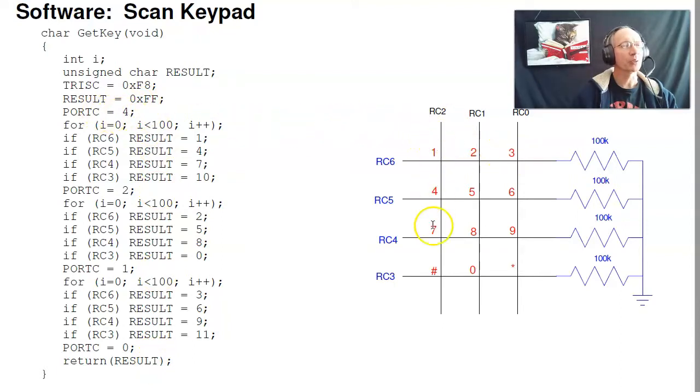I'll then check the first column, port c equals four, outputs 100, checking the first column. If RC6 is high, I push key number one. If RC5 is high, I push key number four, and so on. I'll then check the second column, and then check the third column. This for loop right here slows it down. It takes a little bit of time for the voltage to settle. Counting to 100 in c is one way to kill time. When I'm done, whatever's in result gets returned, and that's the key that I pushed.